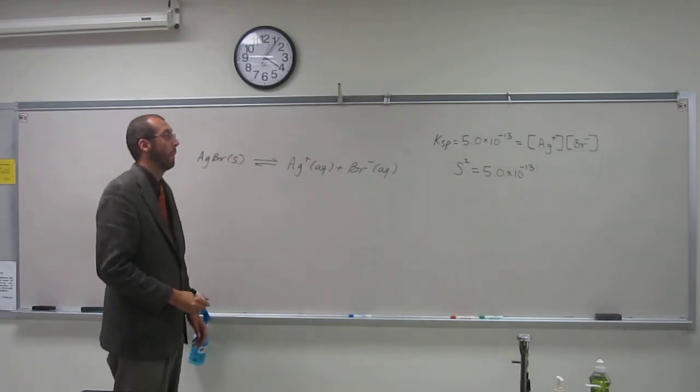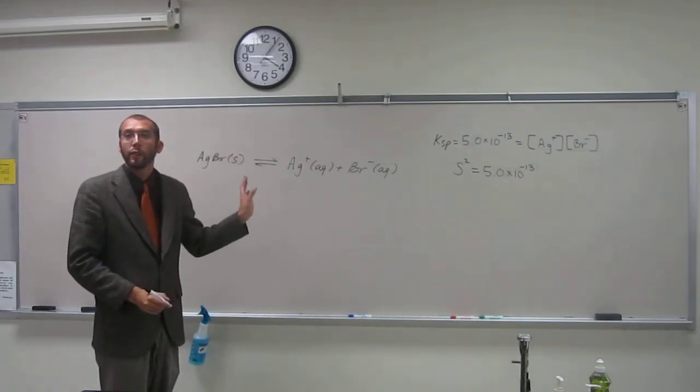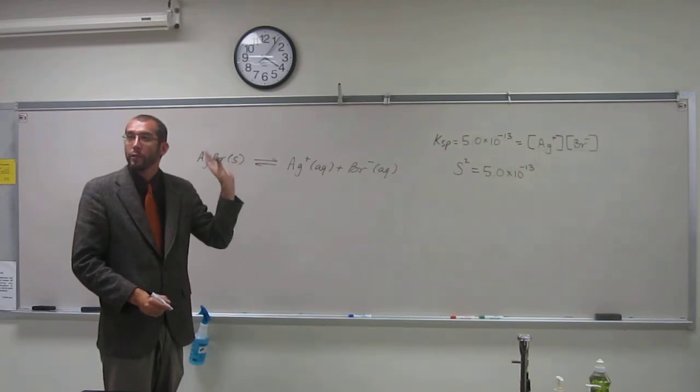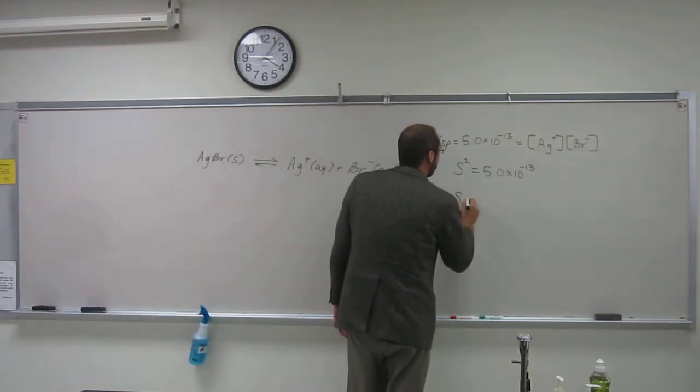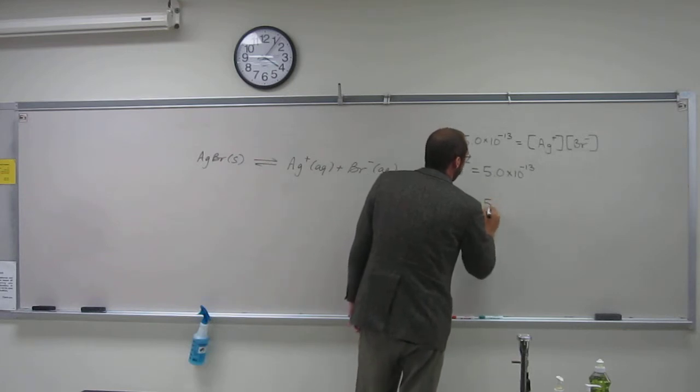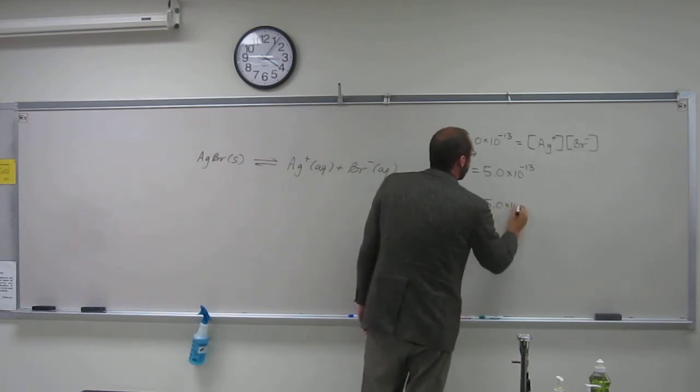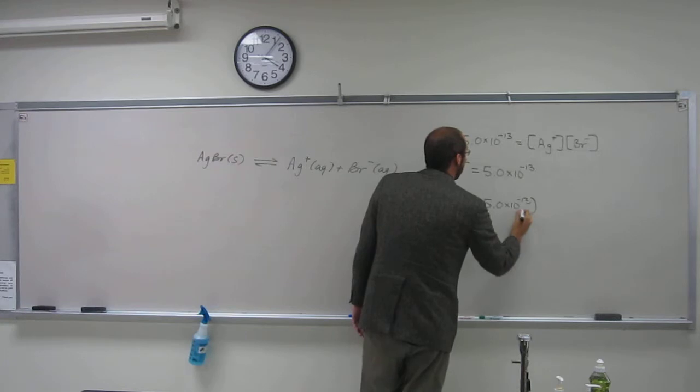Like that. And then you can take the square root of both sides here. So we're going to say S equals the square root of 5.0 times 10 to the negative 13.